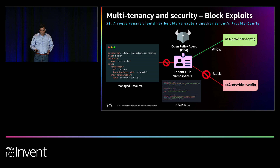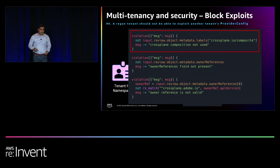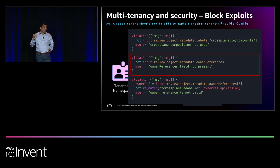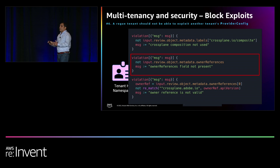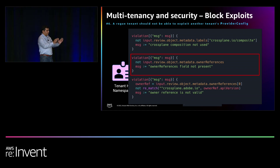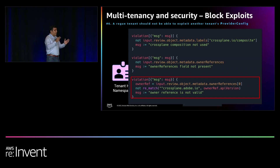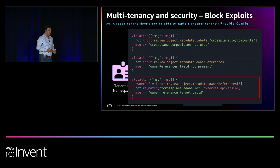Here is an example of a policy with three rules. The first and second rules check for a specific label on a managed resource — crossplane.io/composite — and also check for an owner's reference attribute on the metadata of the managed resource. If these two attributes are present on a managed resource, that implies it is being created in the context of a composite resource. The third check verifies the API version on that composite resource against the pattern crossplane.adobe.io. Together, these three rules ensure that any managed resource on our platform is created through a composition process, and that composite resource would have been defined by Adobe's platform team with best practices codified.